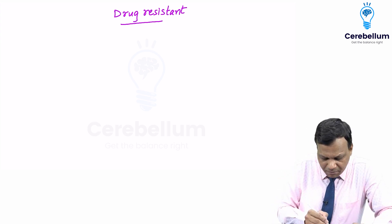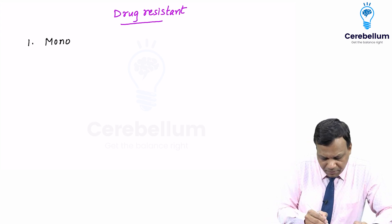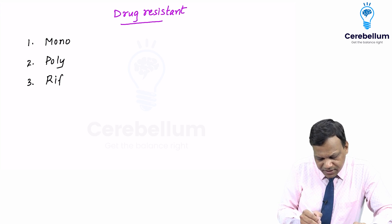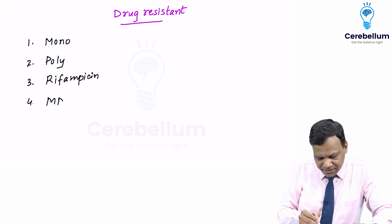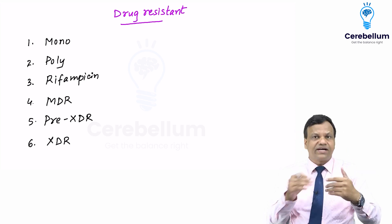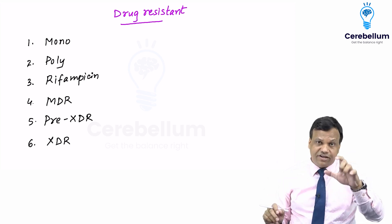Drug resistant TB may be: (1) Mono drug resistant TB, (2) Poly drug resistant TB, (3) Rifampicin resistant TB, (4) Multi drug resistant TB (MDR-TB), (5) Pre-extensively drug resistant TB (Pre-XDR), and (6) Extensively drug resistant TB (XDR). So there are six types of drug resistance — definition is what is asked, not the treatment.